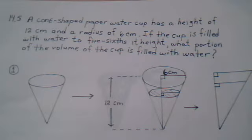A cone-shaped paper water cup has a height of 12 centimeters and a radius of 6 centimeters. If the cup is filled with water to 5/6 its height, what portion of the volume of the cup is filled with water?